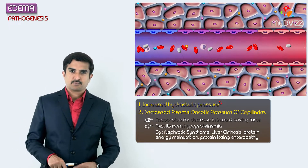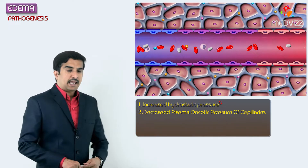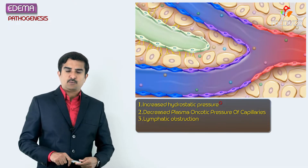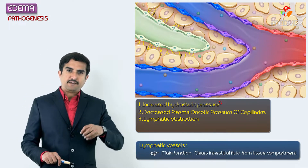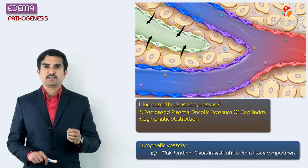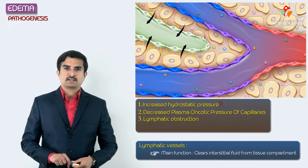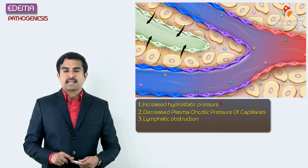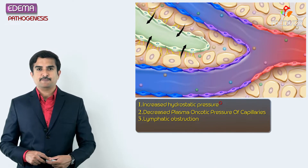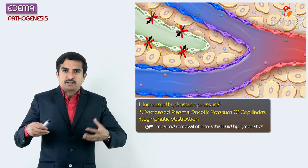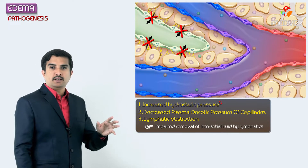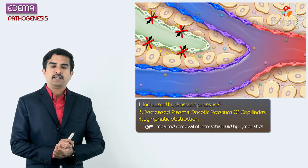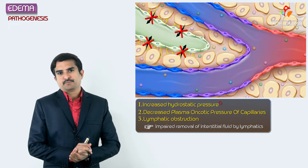Hypoproteinemia leads to edema. The next phenomenon is lymphatic obstruction. The actual role of the lymphatic vessels and lymph is to clear off excess fluid present in the tissue compartment and take it back to the vascular compartment. Whenever there is an impairment or pathology associated with these lymphatic vessels, there will be impaired removal of interstitial fluid by the lymphatics, leading to excess interstitial fluid and the development of edema.